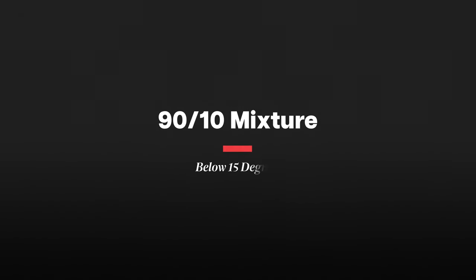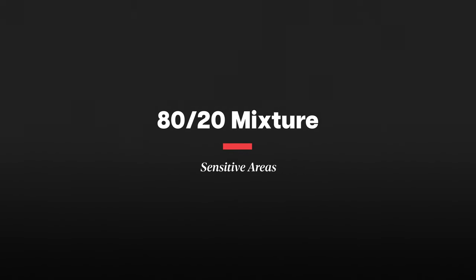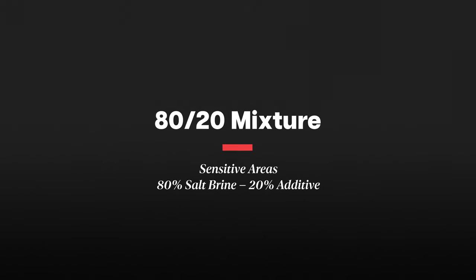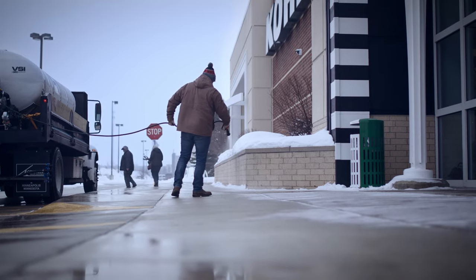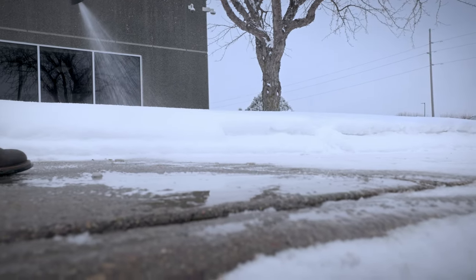When the temperature is under 15 degrees, we'll typically recommend using a 90-10 blend — 90% salt brine and 10% salt brine additive. And on sensitive areas or critical infrastructure, such as sidewalks, parking decks, or along buildings, we're going to recommend using an 80-20 blend. That's because the additives provide a lot of benefit for preserving those surfaces in those critical areas.